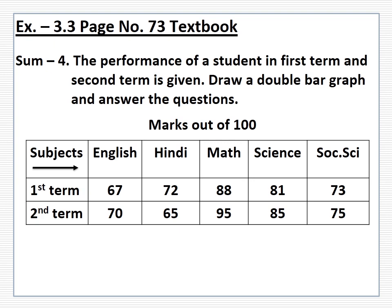The performance of a student in first term and second term is given. Draw a double bar graph choosing appropriate scale and answer the questions. In English he scored 67 marks in first term and 70 marks in second term. In Hindi, 72 marks in first term and 65 marks in second term. Math: 88 marks in first term and 95 marks in second term. In science, 81 marks in first term and 85 marks in second term. In social science, 73 marks in first term and 75 marks in second term.